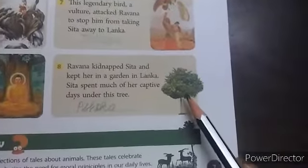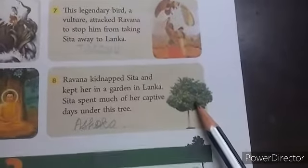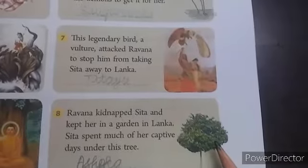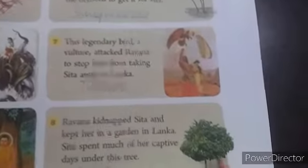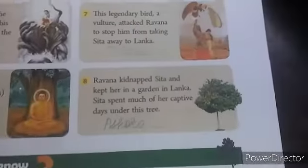Next one: Ravana kidnapped Sita and kept her in a garden in Lanka. Sita spent her days of captivity under this tree. That tree's name is the Ashoka tree. You must know about these birds and animals whose names are used in the tales of Indian mythology.